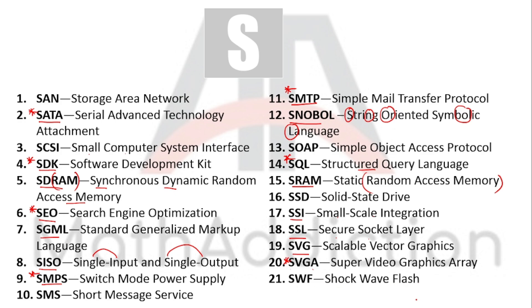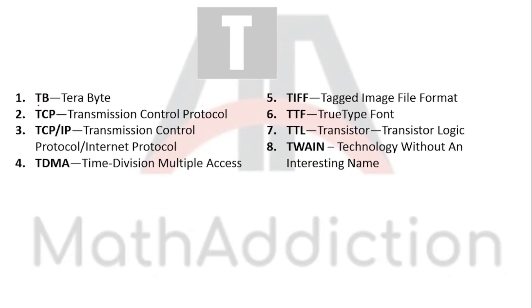TB: Terabyte. TCP: Transmission Control Protocol. TCP/IP: Transmission Control Protocol / Internet Protocol. TDMA: Time Division Multiple Access. TIFF: Tag Image File Format. TTF: True Type Font. TTL: Transistor to Transistor Logic. TWAIN: Technology Without An Interesting Name.